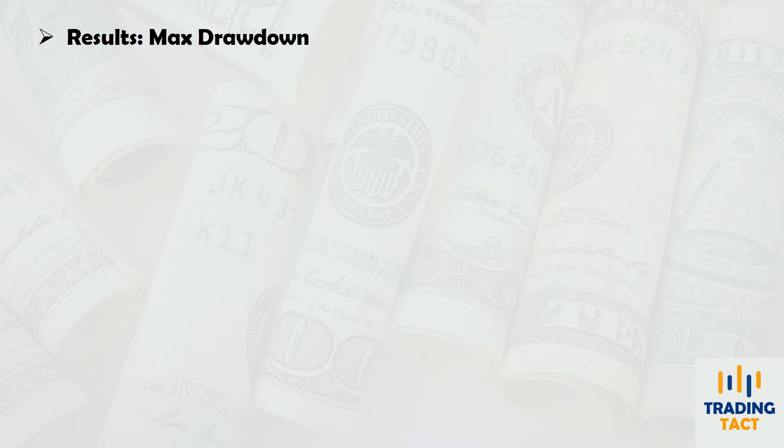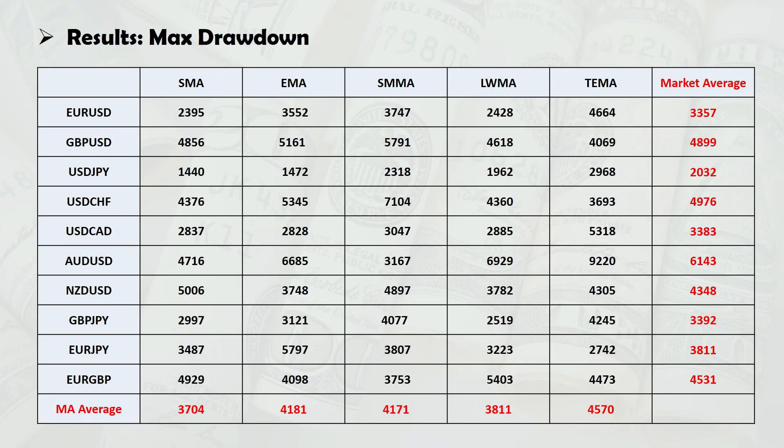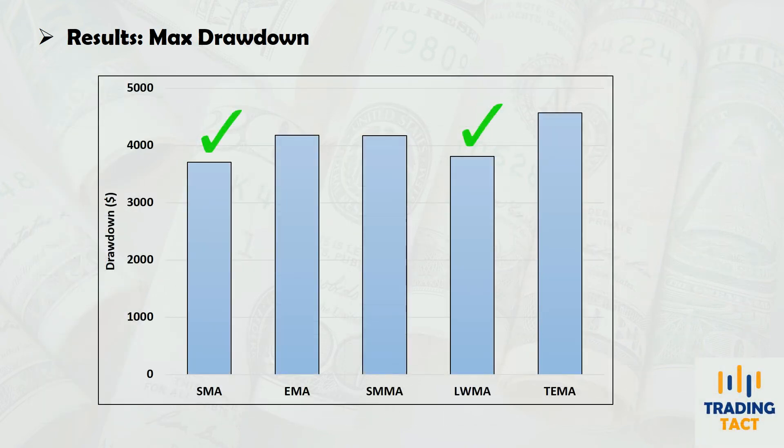Of course, net profit should never be considered in isolation, so let's check drawdown. It's a tie between the simple moving average and the linear weighted moving average.